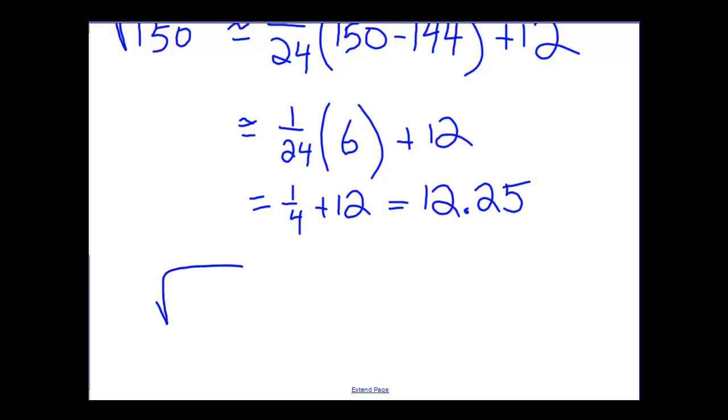My calculator says that the square root of 150 is 12.2474. So you can see that those two values are actually very close together. We're off by one hundredth, roughly, even less than that.